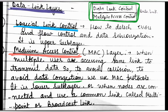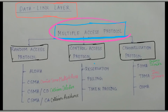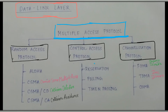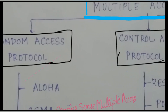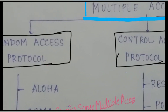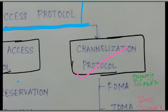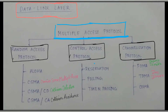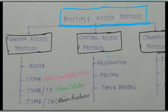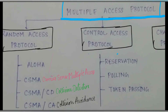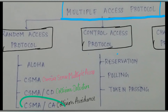What happens in the MAC layer? In the MAC layer there is a random access protocol. Second is your control access protocol, and third is your channelization protocol. So in the MAC layer there are three protocols. In the random access protocol there are some protocols such as Aloha, CSMA, CSMA/CD, and CSMA/CA.